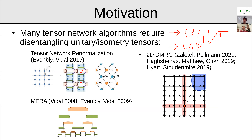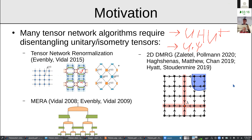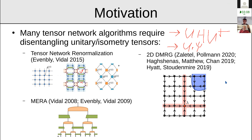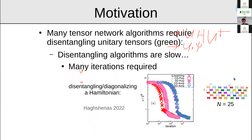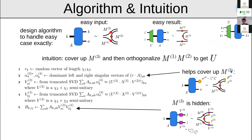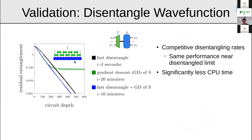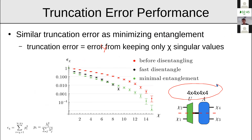[Q&A continued] On bond dimension restrictions: the performance depends on the structure of A. If all numbers were random it would have trouble with larger bond dimensions. If A had more structure — closer to a disentangled state — the algorithm would still perform well with smaller bond dimensions. The middle bond is assumed to have rank chi_1 times chi_2 so that U is a unitary, and chi_3 and chi_4 can be larger than chi_1 and chi_2.